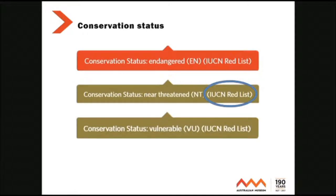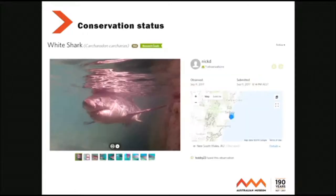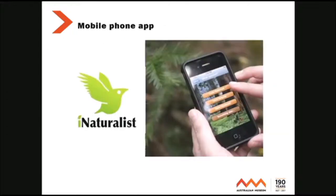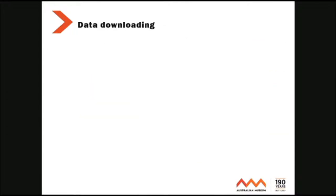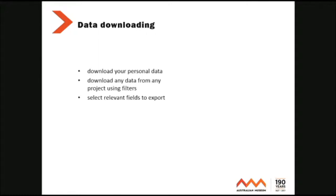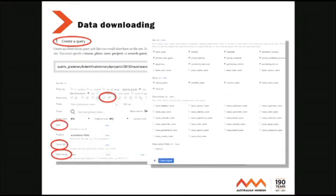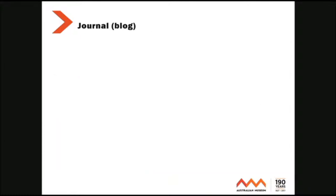Conservation status is also mapped from the IUCN. So this is a white shark from Sydney and you can see it's marked as vulnerable. There is a mobile phone app. Data downloading: you can download your personal data, anybody's data, in multiple formats. Create a query by eFish user, taxon, date range if you want, hit the button and that's it.